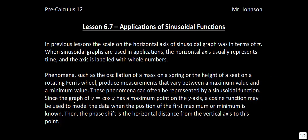This is a big point: since the graph of y = cos(x) has a maximum point on the y-axis — it starts at a maximum and goes down — a cosine function may be used to model data when we know either the first maximum or the first minimum point. The phase shift is the horizontal distance from the vertical axis to that point. So we'll often use y = cos(x) when we know either the maximum or the minimum.